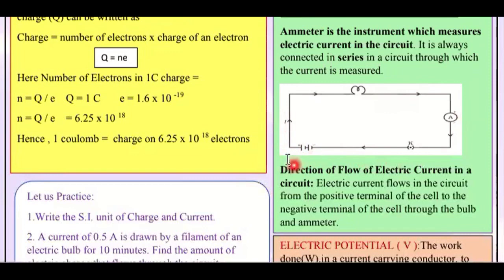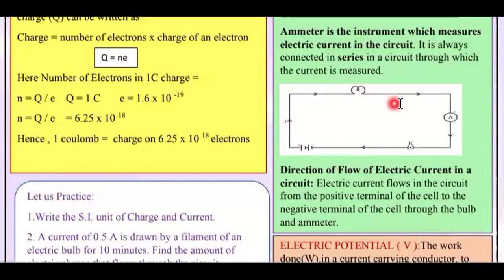The flow of electric current is always from the positive to the negative terminal. The circuit also has an open and close switch, ending at the negative terminal.